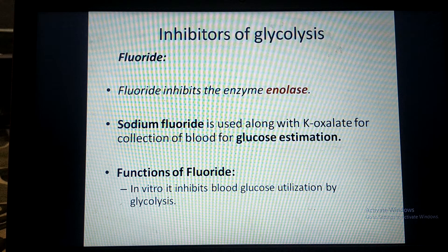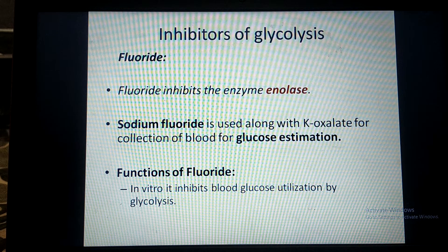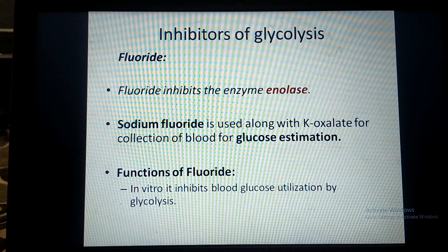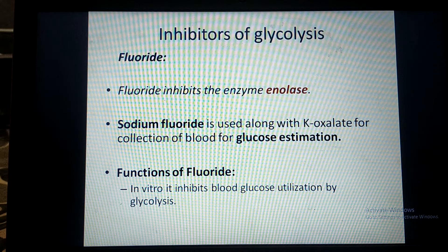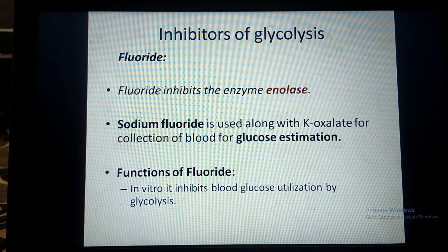To prevent this, we use sodium fluoride in the test tube in which we collect the blood. The sodium fluoride mixes with the blood, enters inside the RBCs, and blocks the pathway by inhibiting Enolase. Therefore, RBCs will not be able to utilize the glucose present in the blood and we will get the correct glucose measurement.